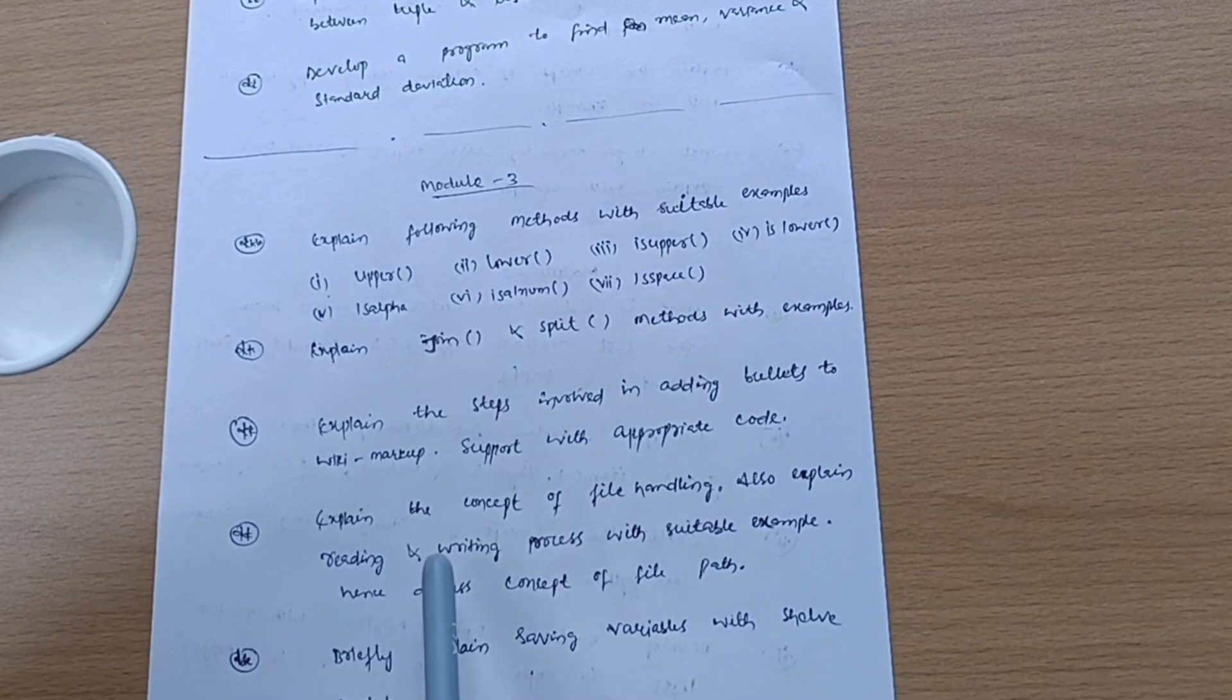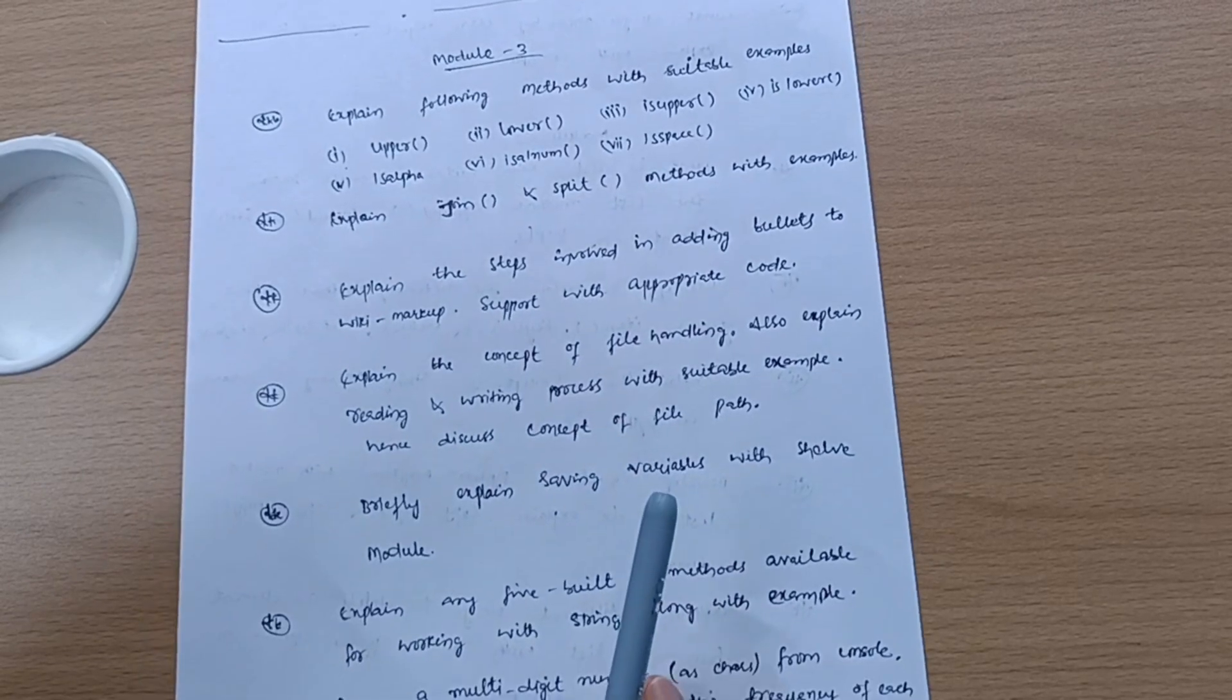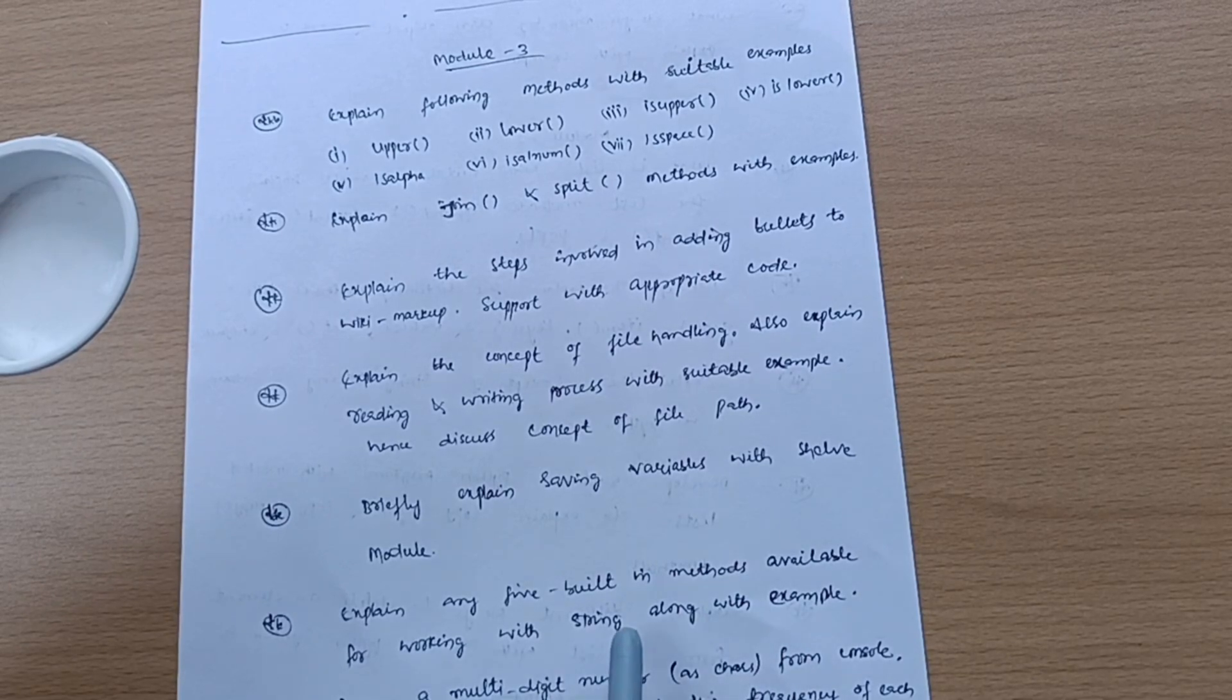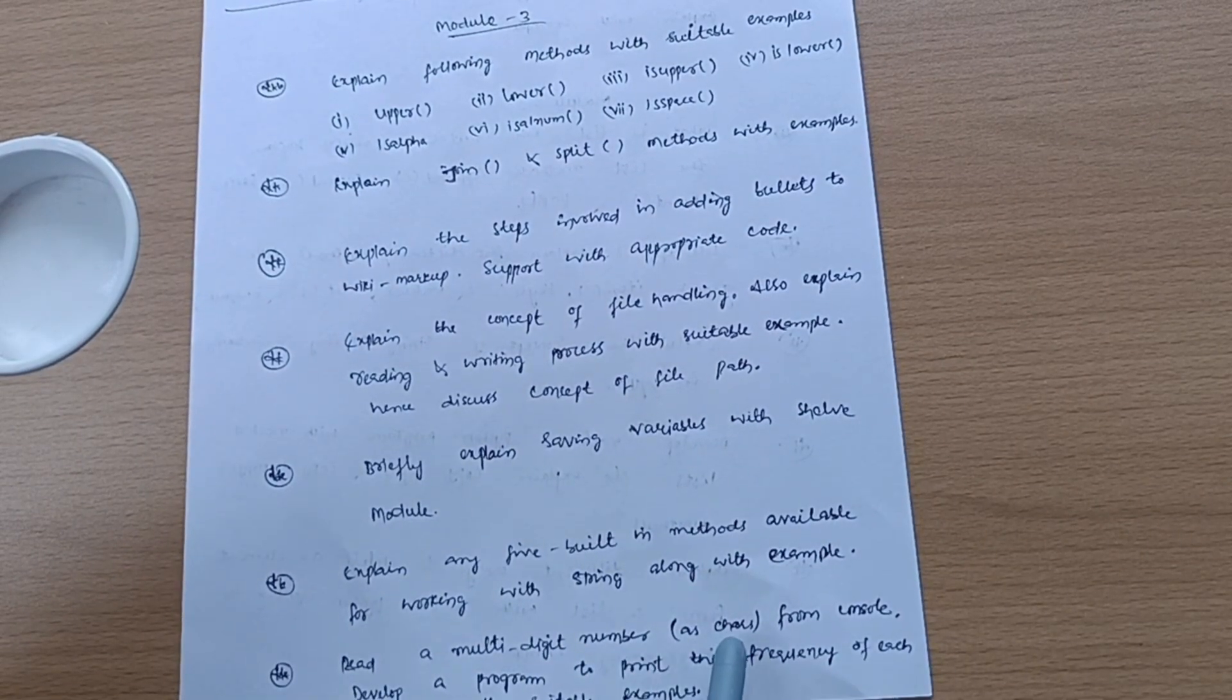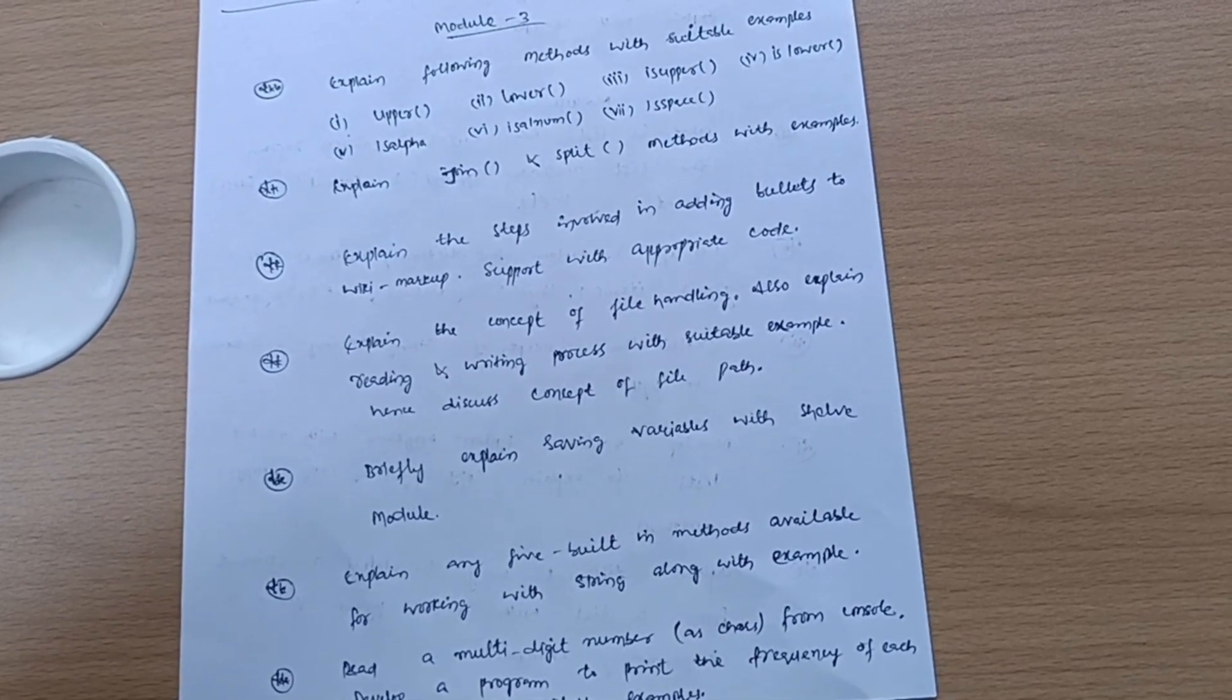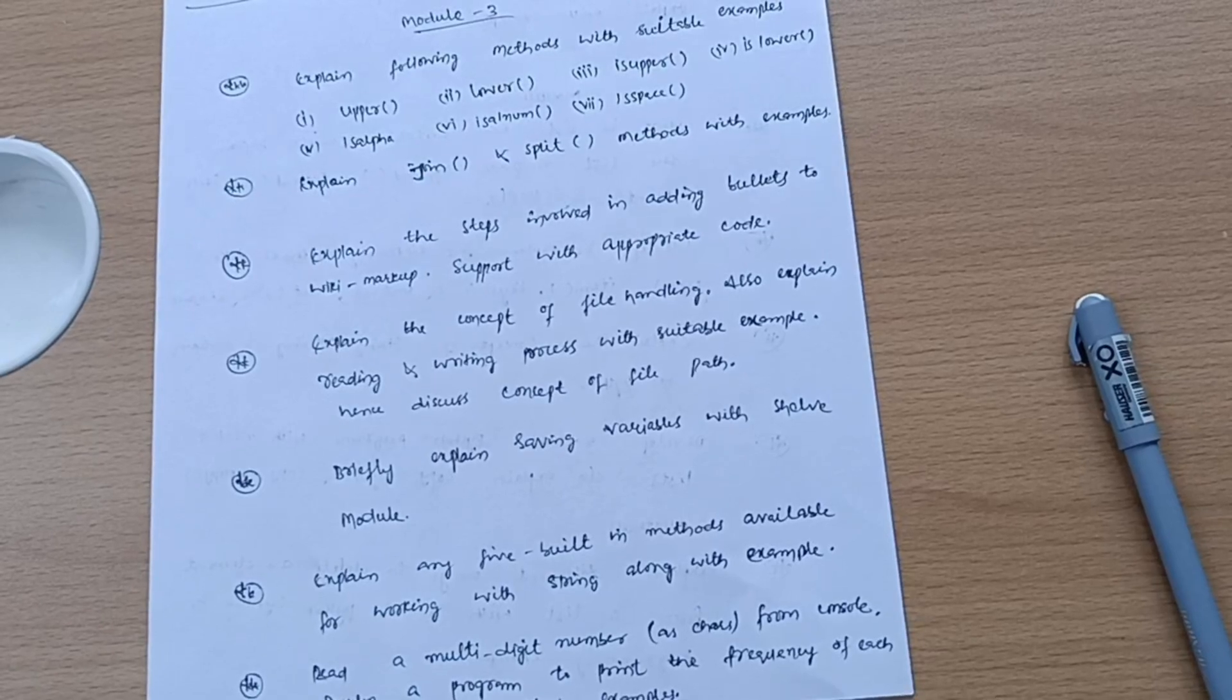Explain the concept of file handling, explain reading and writing process with suitable example. Discuss concept of file path and briefly explain saving variables with shelve module. Explain any five built-in methods available for working with string along with example. Read a multi-digit number as string from console, develop a program to print the frequency of each digit with suitable examples.